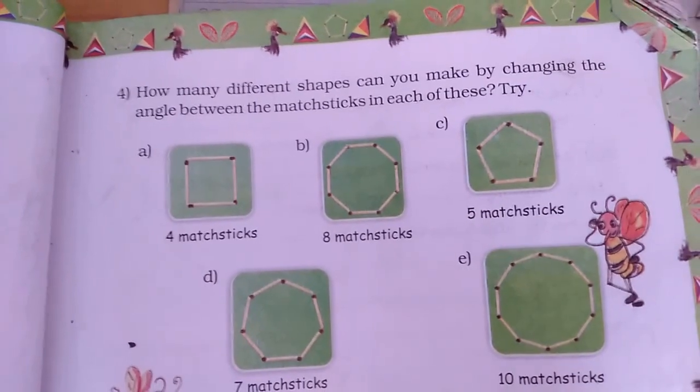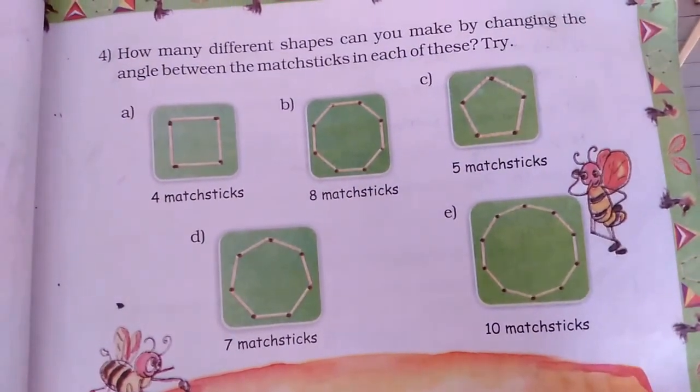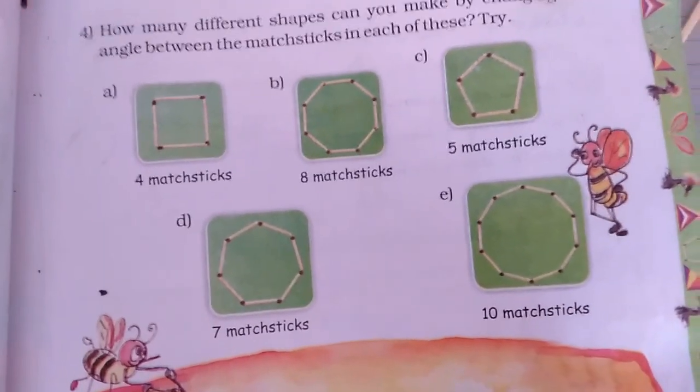How many different shapes can you make by changing the angle between the matchsticks in each of these? How many figures are you showing? Five. Five.